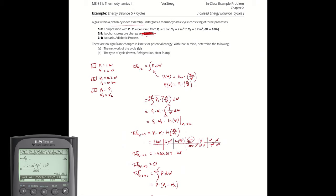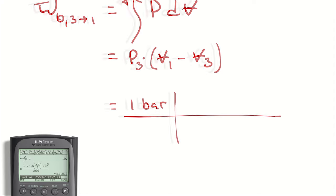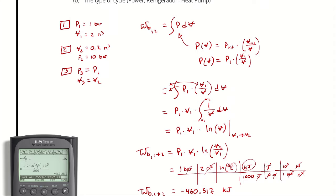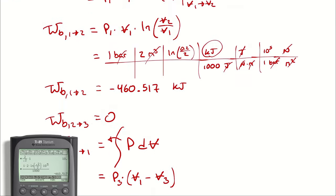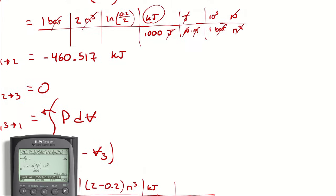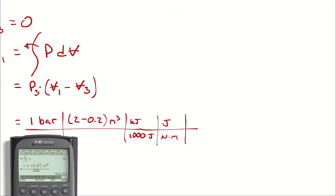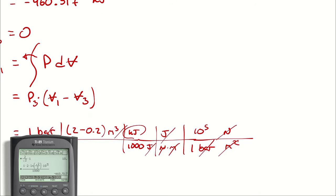The boundary work from 2 to 3 is zero because the process is isochoric — no change in volume means no moving boundary and no work. For 3 to 1, I have P3 (which equals P1 = 1 bar) multiplied by the difference in volume: V1 minus V3 = 2 minus 0.2. Applying the same unit conversions (bar to N/m², divided by 1000 for kJ), the boundary work from 3 to 1 is 1 × (2 − 0.2) × 10^5 / 1000 = 180 kilojoules.